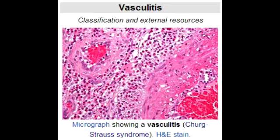What is Wegener's granulomatosis? Wegener's granulomatosis is a type of vasculitis in which there is granulomatosis with polyangiitis. The lab or diagnostic finding observed with Wegener's granulomatosis is C-ANCA, which stands for Antineutrophil Cytoplasmic Antibodies.